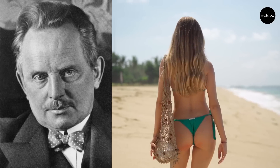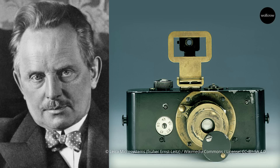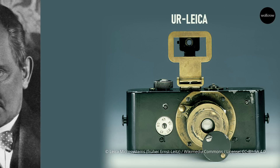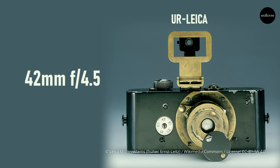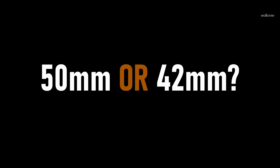What very few know is that the prototype of the Leica 1, called the Ur-Leica, had a focal length of 42mm. The lens designed wasn't sharp enough to resolve 35mm full frame, so Oskar had to design another lens entirely — the 50mm. So which is it? 42 or 50mm? Which focal length effectively represents the human eye? Let's find out in this video.